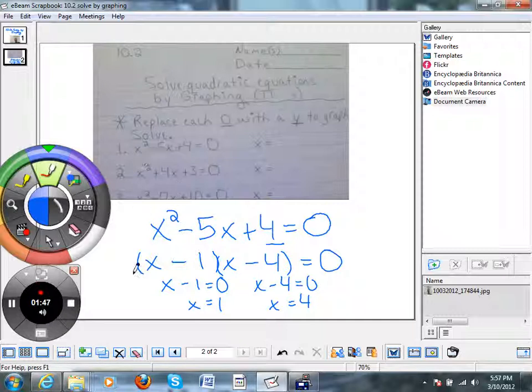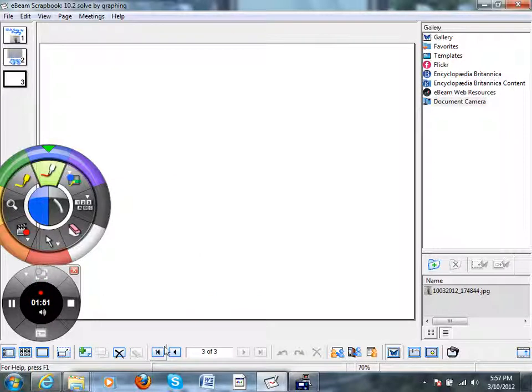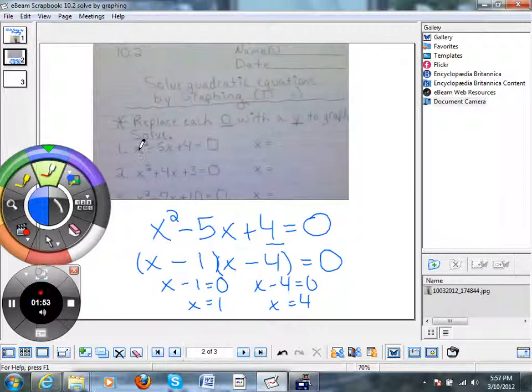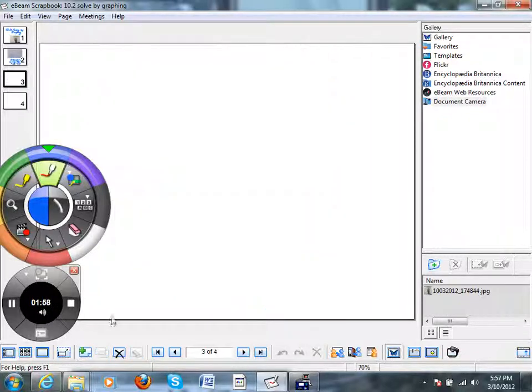So the problem is x squared minus 5x plus 4. So what I'm going to do in the calculator, I'm going to graph, instead of a 0, I'm going to put y equals x squared minus 5x plus 4. So notice, instead of the 0 in that spot, I'm putting a y.